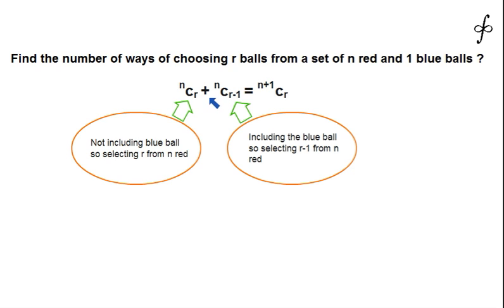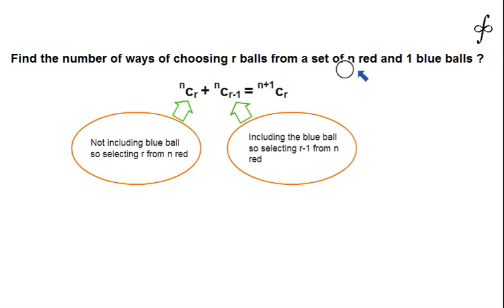We are going to prove this identity from a logical standpoint. Consider the problem: find the number of ways of choosing r balls from a set of n red balls and 1 blue ball.